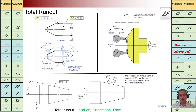Here I would like to highlight the direction of the dial gauge — it should be perpendicular to the dimensioned surface while the component is going to rotate around the datum axis.